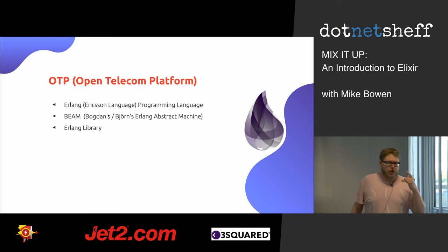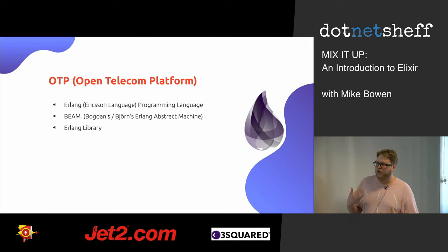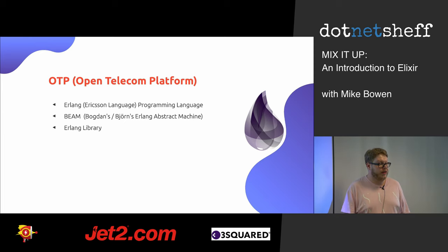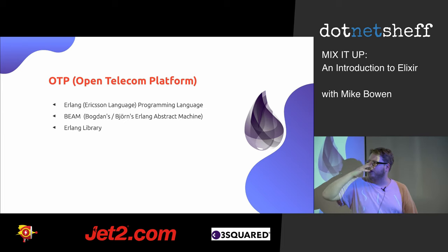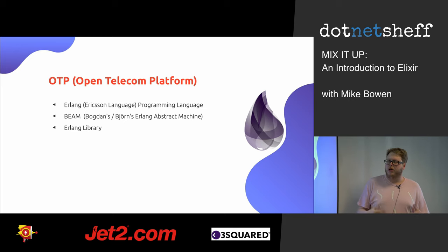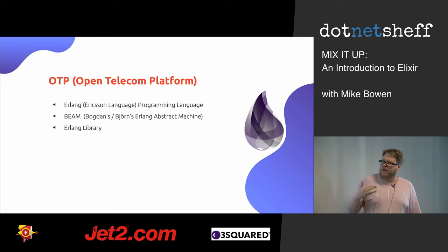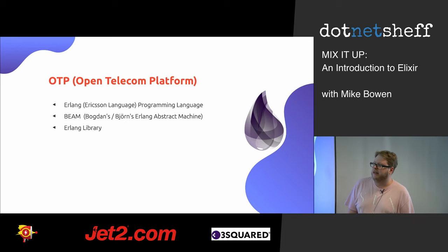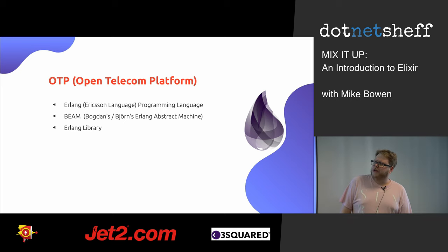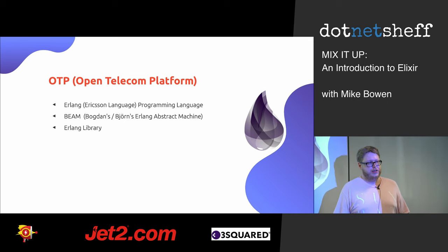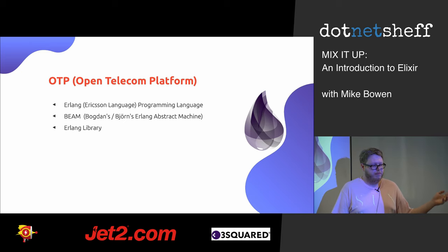I really like Elixir as a language — it's got an awful lot of really nice things in it. But that's without discussing the actual platform it runs on, which is called OTP, the Open Telecom Platform — which is a bit of a misnomer. It dates back to when Erlang and the Erlang runtime came about, which was 33 years ago.